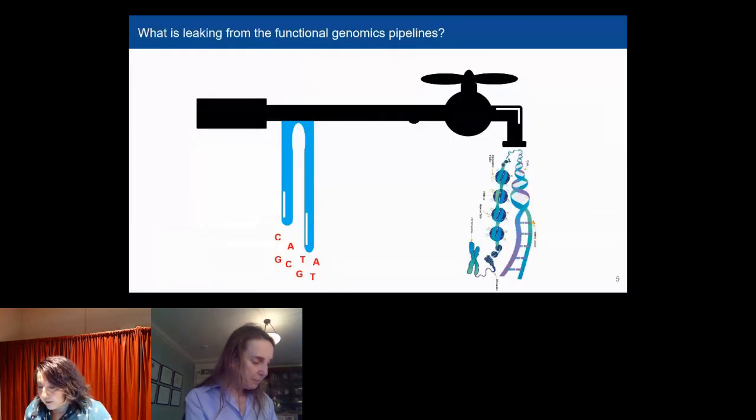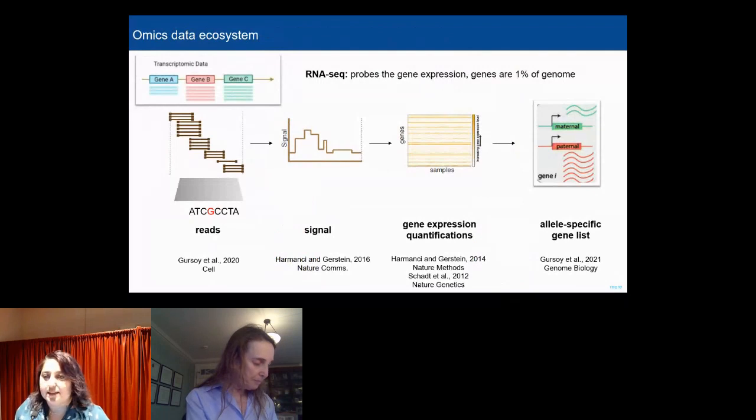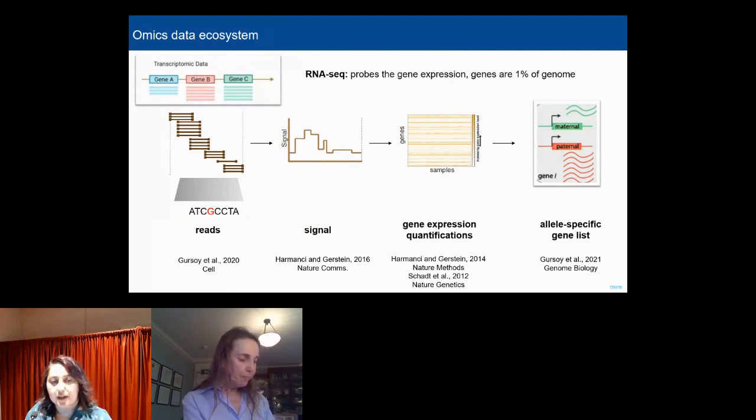First, I will talk about what is actually leaking from the functional genomics pipelines. I'm going to focus on transcriptomic data for simplicity, but also it's one of the most abundant population-level functional genomics datasets out there. When we obtain transcriptomic data, we basically sequence the cDNA of the RNAs, and then we get the reads. We can progressively summarize this data by overlapping the reads under certain genomic coordinates and get the signal profiles. We can merge it with other individuals in the dataset and get samples by genes, gene expression matrices. We can even further summarize it by selecting a list of genes that are maybe highly expressed, lowly expressed, or allele-specific genes.